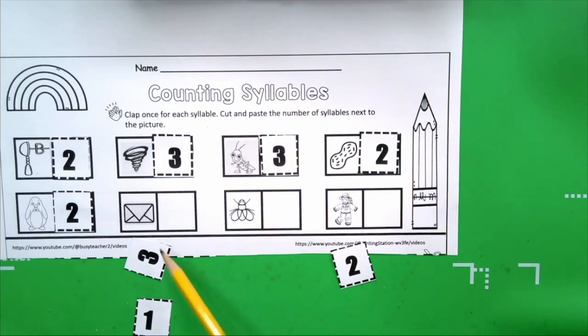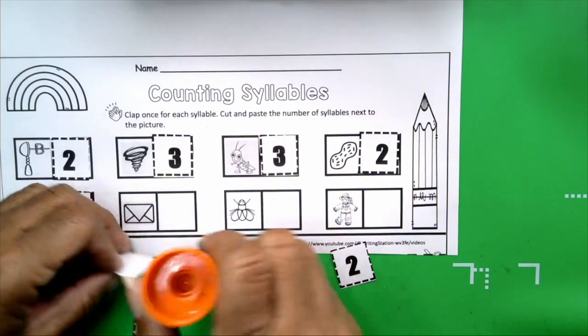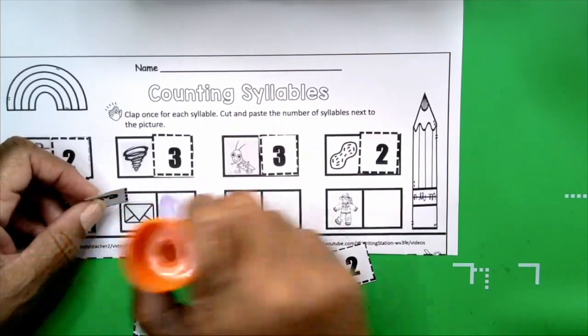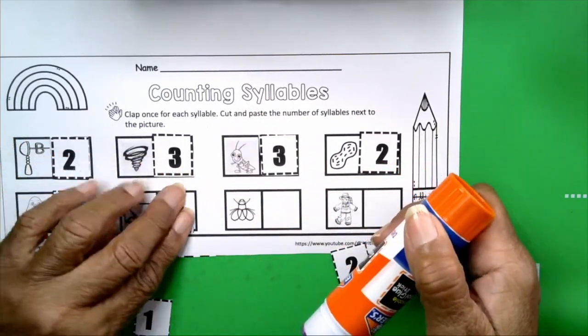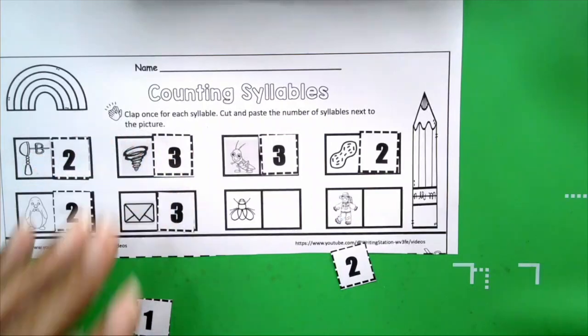Okay. Take a look at the next picture, boys and girls. Envelope. Say it. Envelope. Envelope. How many claps did you hear? Three. How many syllables are in the word envelope? Three.